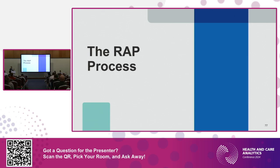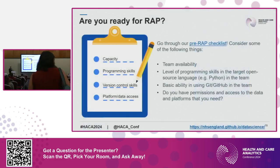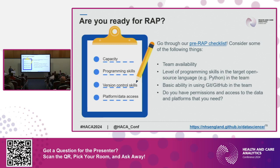This is how we put those principles into practice on a process that already exists — from the angle of the RAP team going in to help another team. The first step is skills assessment: who are you working with, what skills do they already have, do they know coding or Git, where are the gaps? Create a training program to fill the gaps. Also get your ducks in a row logistically with data access, which can take a while in terms of access to platforms.